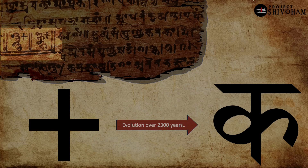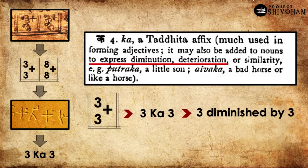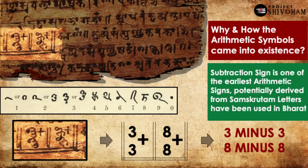Over 2,000 years of evolution, the 'ka' on the left became the 'ka' we use today on the right. Now, what is the meaning of this sound 'ka' in Sanskrit? Single letters also hold meaning in Sanskrit, and the meaning of 'ka' is to diminish or to reduce. So 'three ka three' is actually three minus three — three diminished by three. What you're witnessing here is one of the most ancient arithmetic operations in the history of mankind: subtraction.